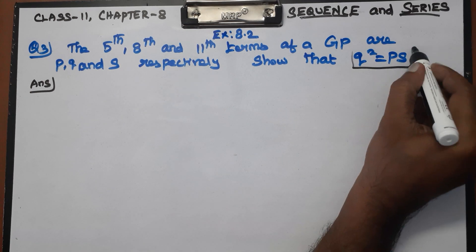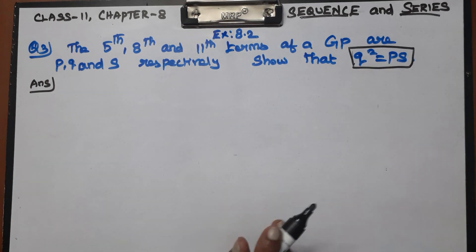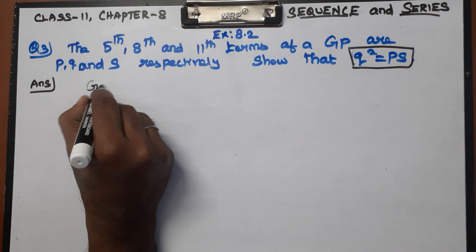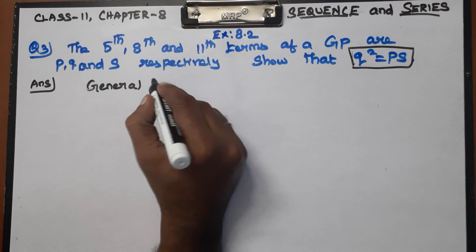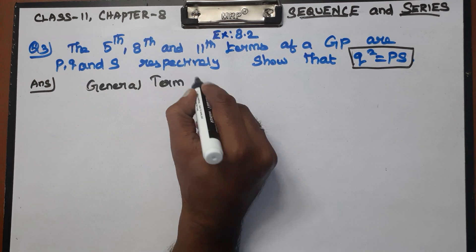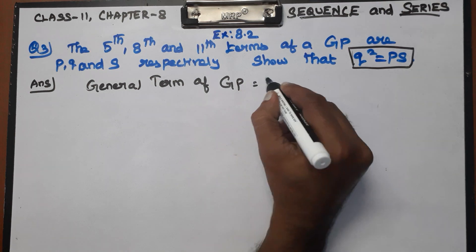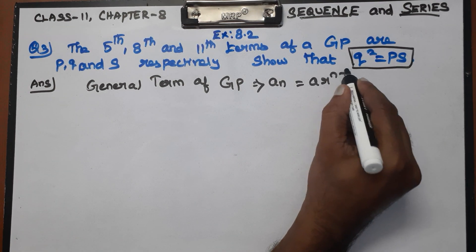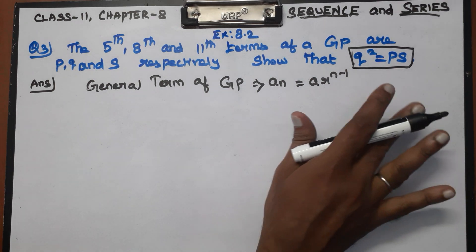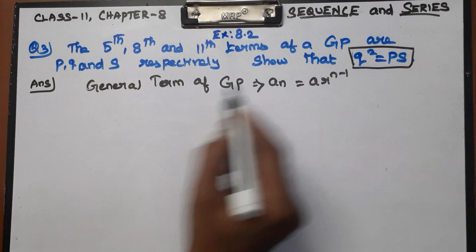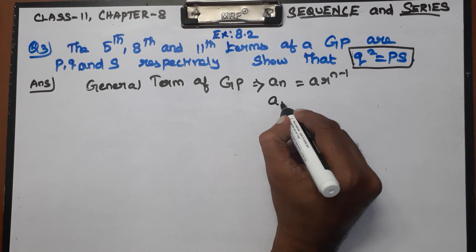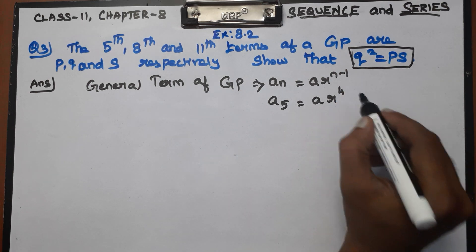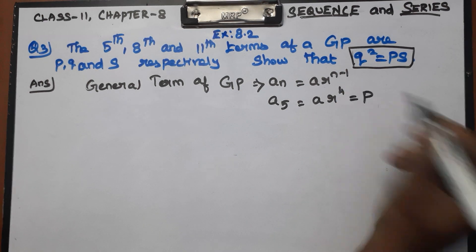We will prove this. To prove it, we need the general term. We know that the general term of a GP is Aₙ = A·Rⁿ⁻¹. For n=5, the 5th term is A·R⁴, which equals P.